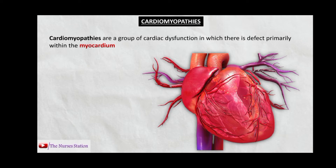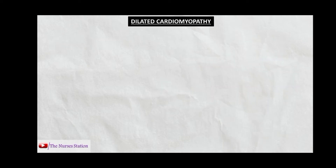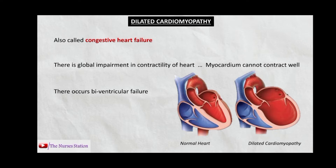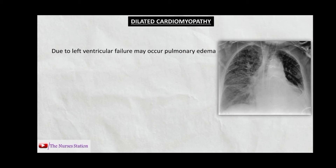Cardiomyopathies are of three types. The first type is dilated cardiomyopathy, also called congestive heart failure. In dilated cardiomyopathy, there is global impairment in the contractility of the heart — the myocardium cannot contract well. When the myocardium cannot contract well, the heart cannot pump enough blood out, and blood starts to accumulate in the ventricles, causing dilation. This results in biventricular failure, meaning both the right and left ventricles fail. The pressure in the left ventricle increases, which in turn increases the pressure inside the left atrium.